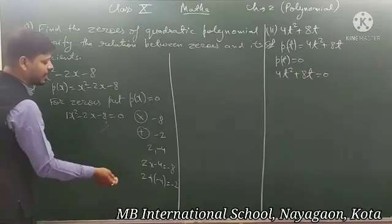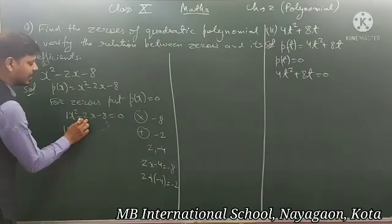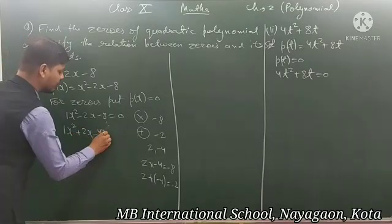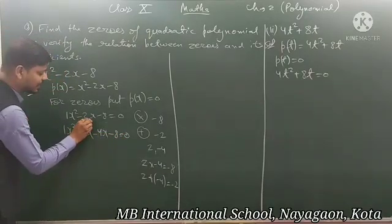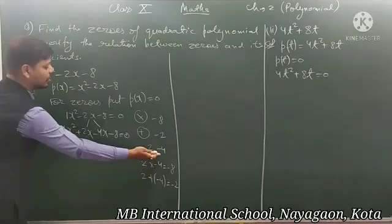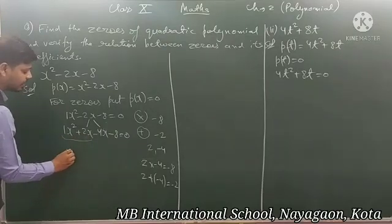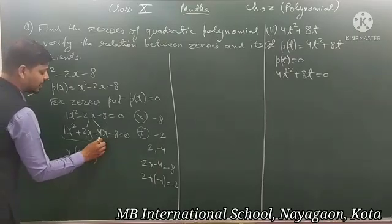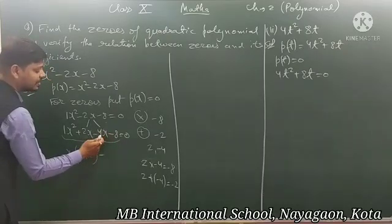Now we break the middle term into two parts: x² + 2x - 4x - 8 = 0. From the first two terms, x is common: x(x + 2). From the last two terms, -4 is common: -4(x + 2). So we get x(x + 2) - 4(x + 2) = 0.